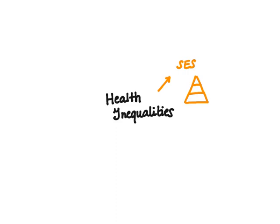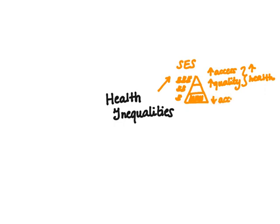The lowest SES is at the bottom of the pyramid. Quality of health care and access to health care both improve toward the top of the pyramid. Those at the bottom, who tend to comprise a larger portion of the population, have lower socioeconomic status and their health status tends to suffer because they have decreased access to health care and decreased housing quality.